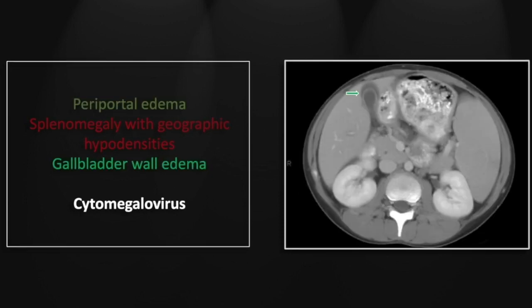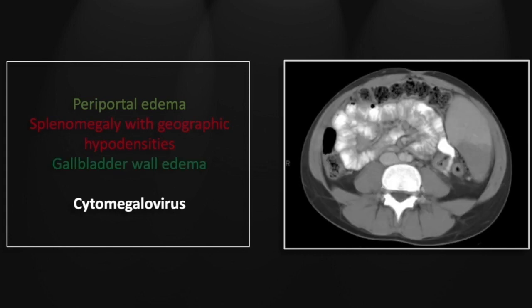Lower down, you can appreciate the marked gallbladder wall edema. Of course, the list of differential possibilities associated with that finding is vast, but cytomegalovirus or other viral hepatitis infections are certainly on that list. And lower down, another one of those geographic hypodensities denoting a splenic infarct.